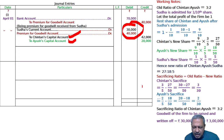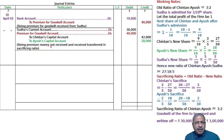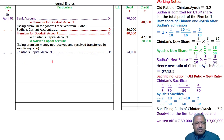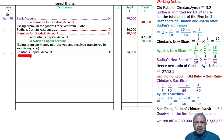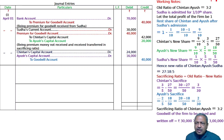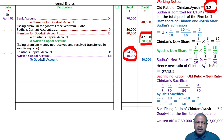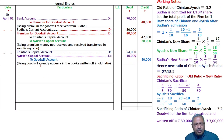In the last line of the question it is written: goodwill already appears in the books at 40,000. So goodwill is already appearing in the books. The narration will be: being premium money not received, transferred in sacrificing ratio. Since goodwill of 40,000 is already in the books, write it off. Old partners — Chintan's capital account debited and Ayus's capital account debited to goodwill account. This existing goodwill of 40,000 is written off in the old ratio of 3:2. Narration: being goodwill already appearing in the books, written off in old ratio.